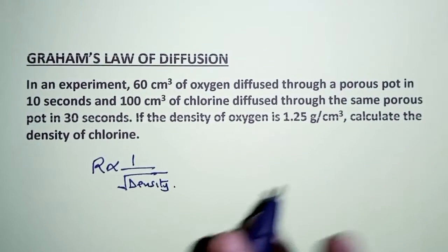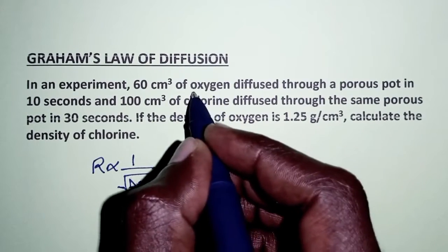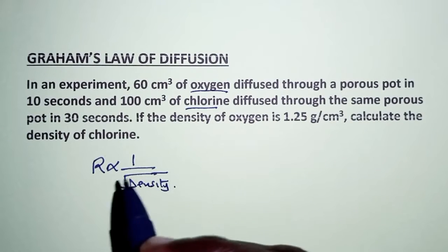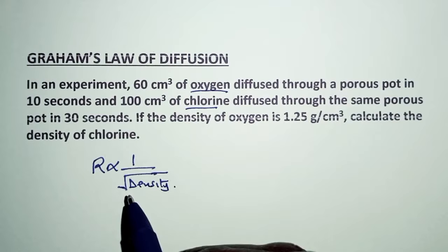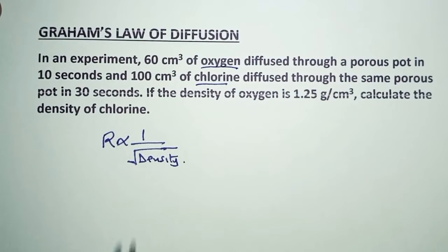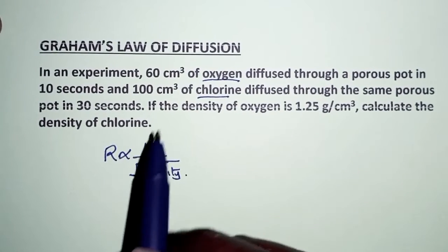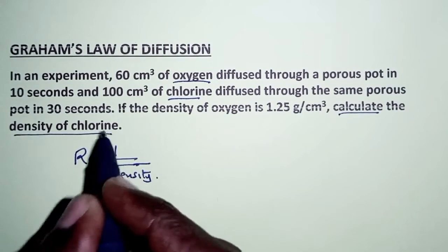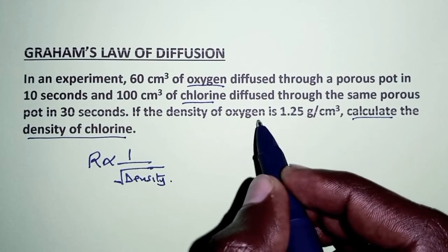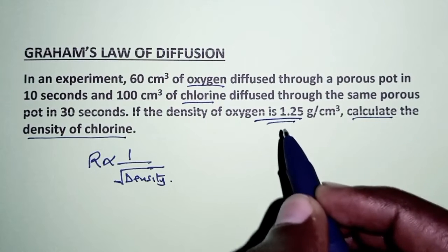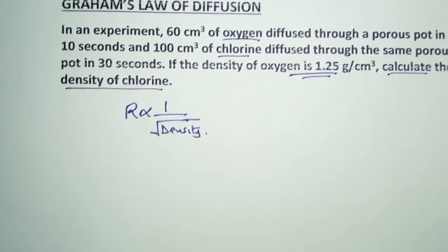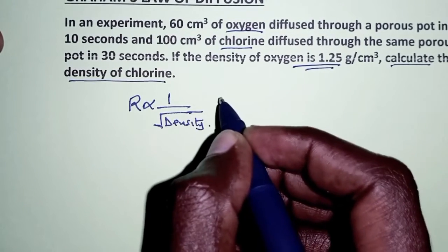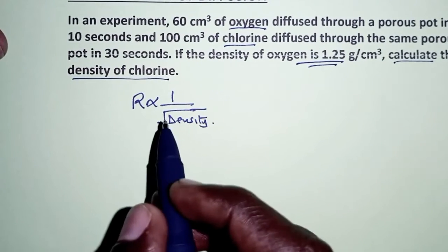In the equation we have here, we have two gases — oxygen and chlorine gas — whose rate of diffusion is to be compared. In order to apply Graham's law of diffusion to solve this, remember we are told to calculate the density of chlorine. We are going to use a variation of Graham's law of diffusion.